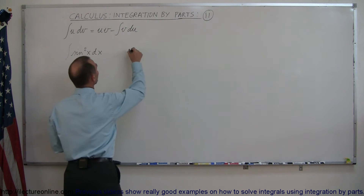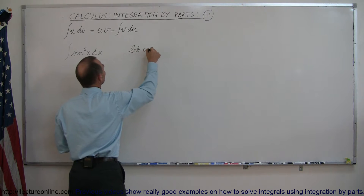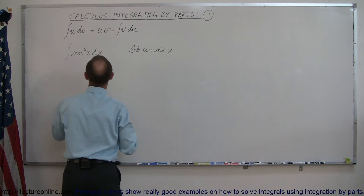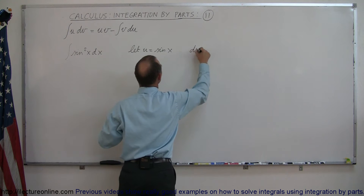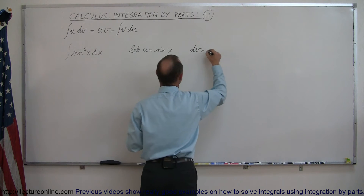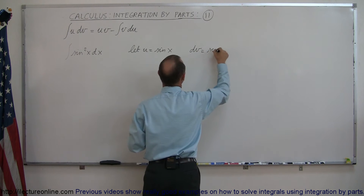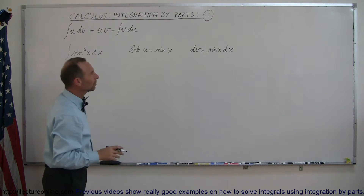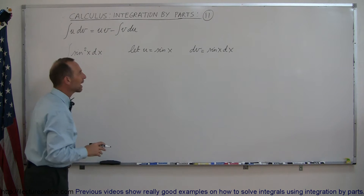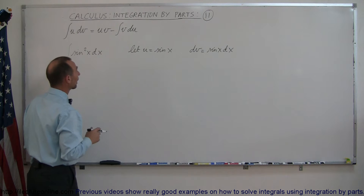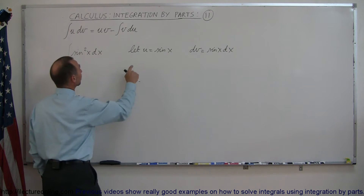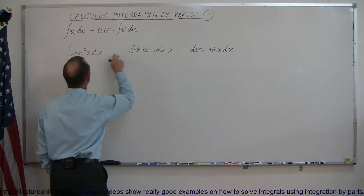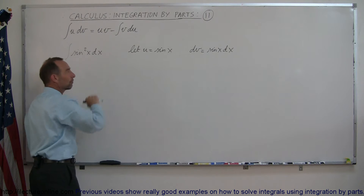We're going to let u equal the sine of x, which leaves dv to be equal to the sine of x dx. This may take you a few trials if you hadn't seen this trick before. Notice that if you multiply u times dv, which is what we have underneath the integral sign, you get back what we started with — so far we're good.